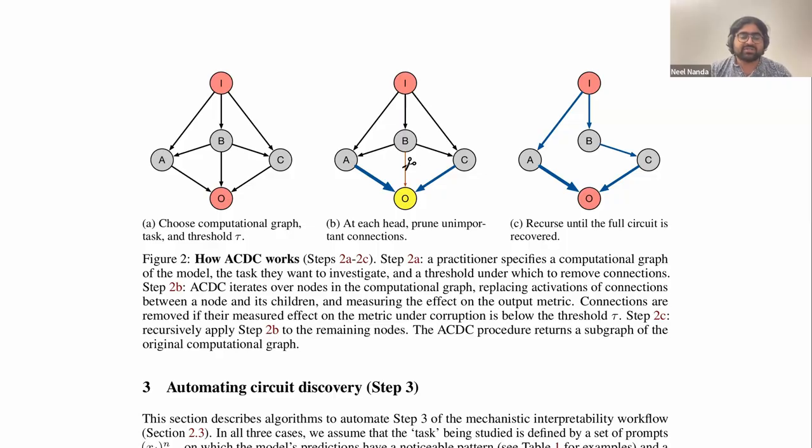Welcome to part two. We're going to be digging more into the ACDC algorithm, the design decisions, and kind of where this lives in the space of all possible algorithms. Why do you look for edges rather than nodes? And what are the pros and cons here?